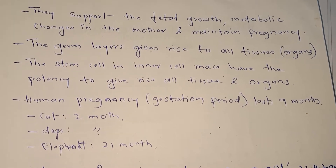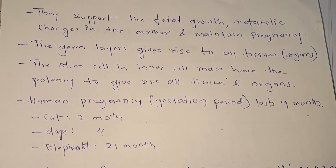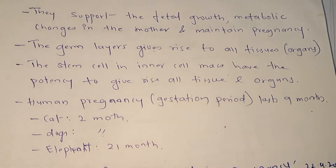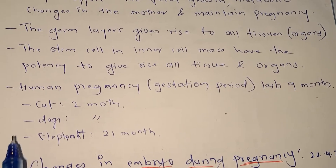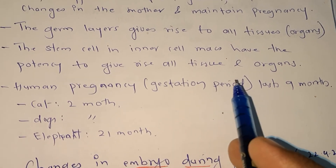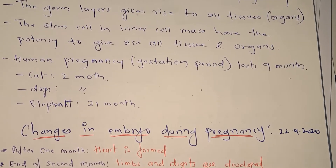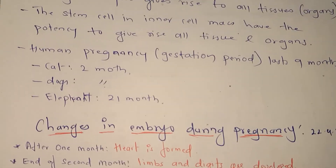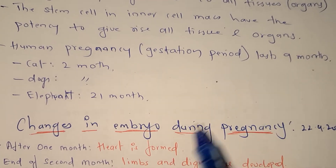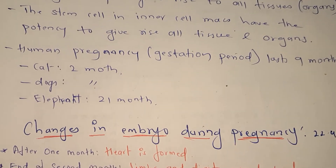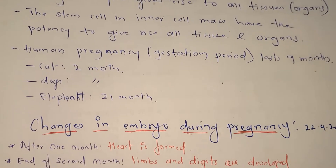There are germ layers — ectoderm, endoderm, and mesoderm — from which all tissues and organs are formed. These germ layers contain stem cells found in the inner cell mass, which have the potency to give rise to all types of tissues and organs. This is how a complete baby with all body parts is formed. The human gestation period is about 9 months. In cats and dogs it is 2 months, and in elephants it is 21 months.